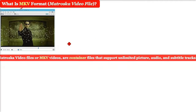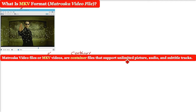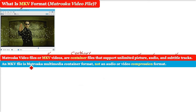MKV format. MKV is a Matroska video file. Matroska video files, also known as MKV files or videos, are container files that support unlimited picture, audio, and subtitle tracks. A MKV file is the Matroska multimedia container format used for videos. MKV files are not an audio or video compression format — MKV is a container and not a codec. It contains the various codecs.